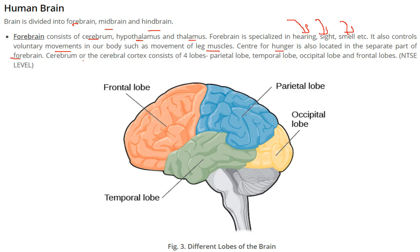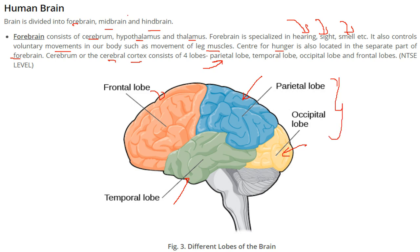The cerebral cortex consists of four lobes: the parietal lobe, the temporal lobe, the occipital lobe, and the frontal lobe. These are the different lobes of the brain.